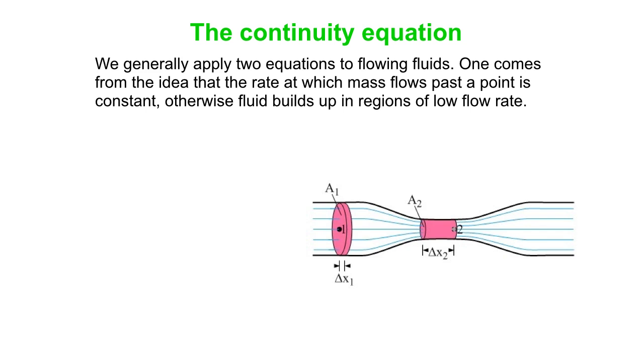So if you stand by the tube and you just measure the amount of fluid that flows past you in a certain time interval, that's got to be the same at every point in the tube. Otherwise, either fluid is going to build up in regions of low flow rate or it magically has to be manufactured in regions of high flow rate. That doesn't make any sense. So the mass flow rate is a constant value.